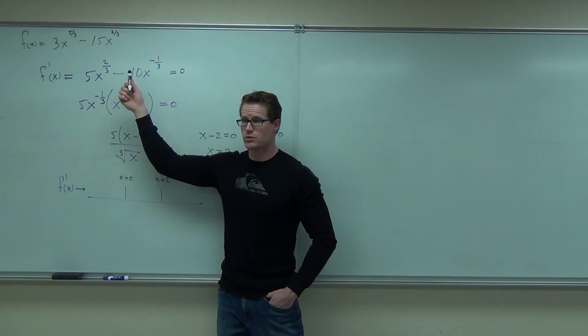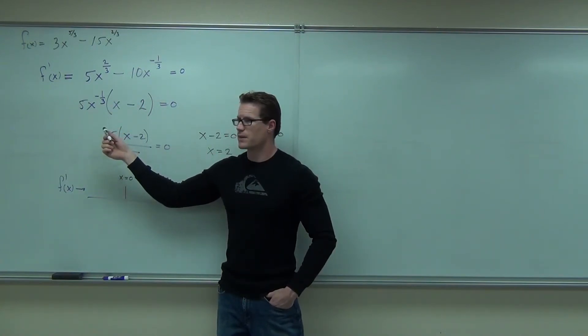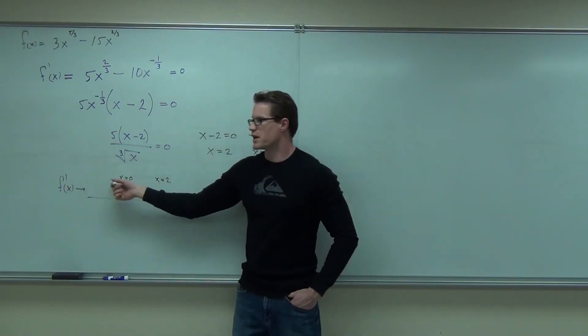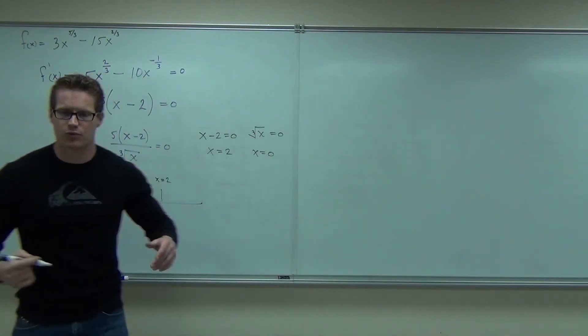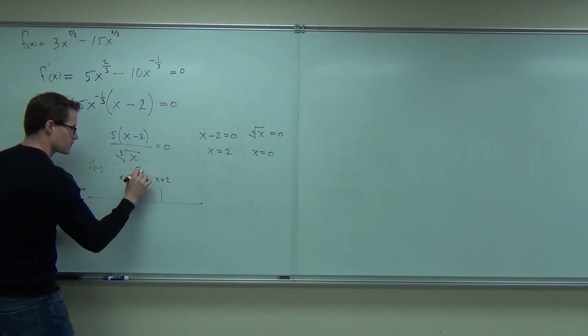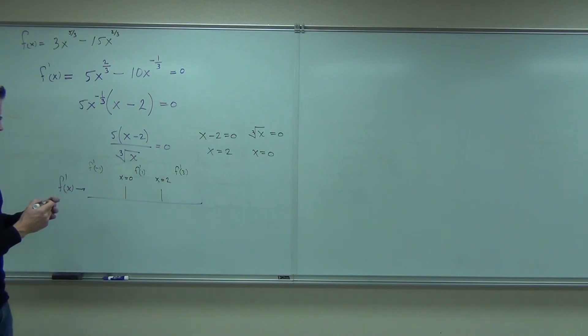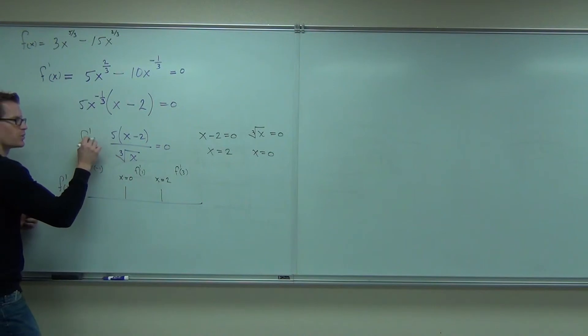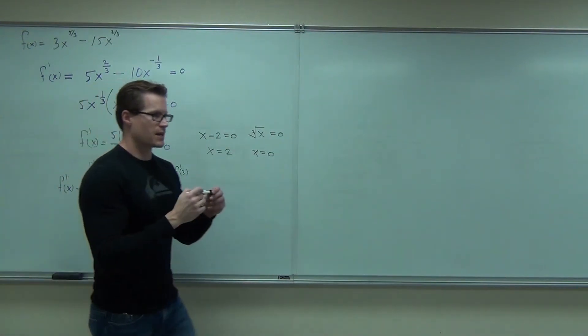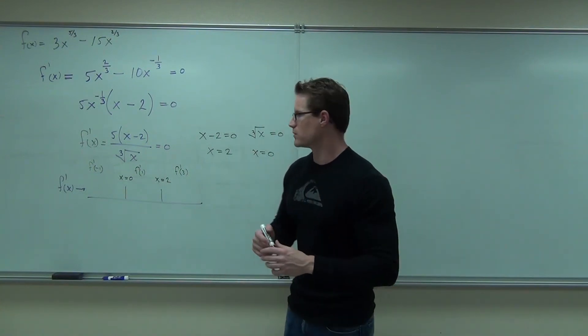Do I plug it in my original, which gives me points, or my first derivative, which gives me slopes? The first derivative. That's why it's called the first derivative test. So, take some numbers here, f prime of negative one, f prime of one, f prime of three. And we're plugging it into, well, the first derivative, because what I know is that if the slope is positive, I'm increasing. If the slope is negative, I'm decreasing. That's what we want to find out.